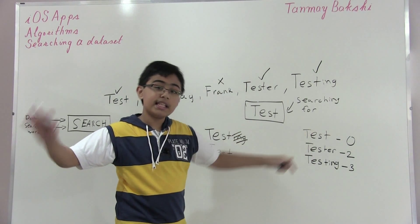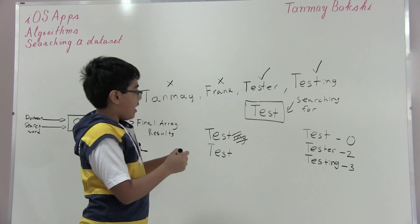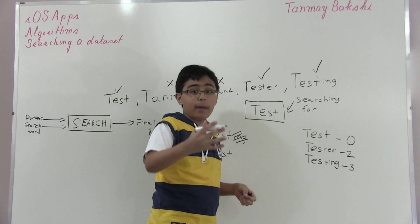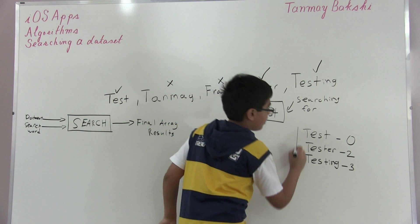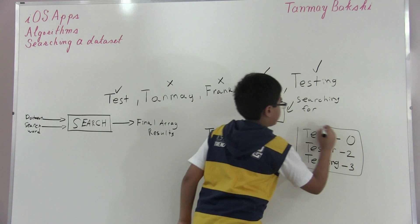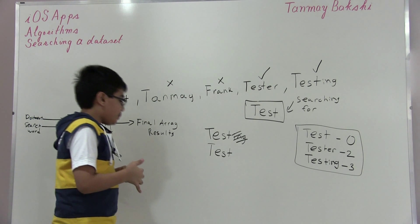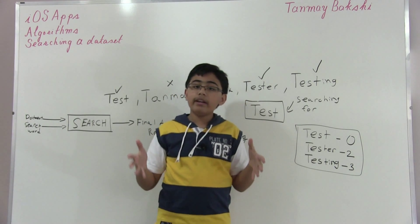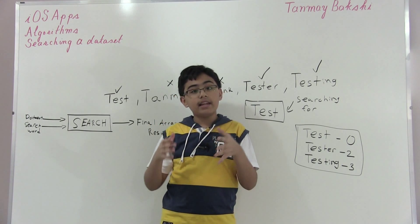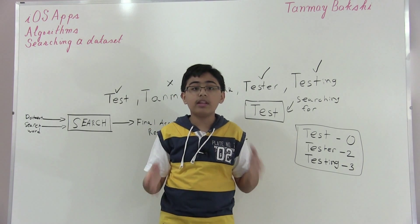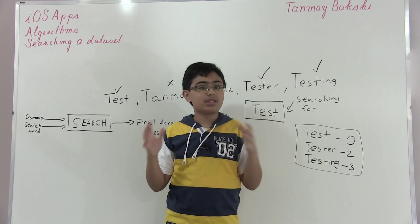Once sorted, you display that in the UI table view and you're done searching. Theoretically, if we give our app this dataset and search for 'test', it will give us these three results in this exact order. Now that I've explained the algorithm, let's go to the Mac part, show you the code, a live demonstration, and there will also be source code in the description.